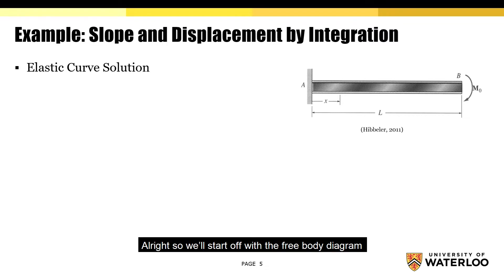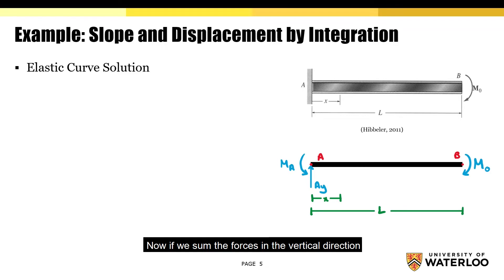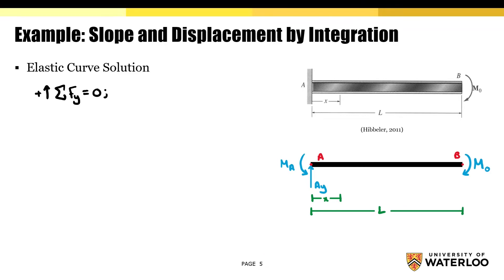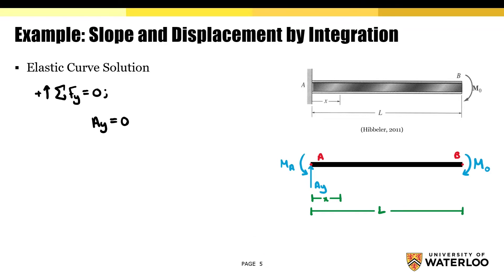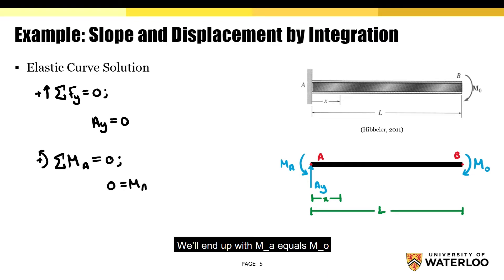We'll start off with the free body diagram. If we sum the forces in the vertical direction, AY would equal zero. Now, if we take the sum of moments about point A, we'll end up with MA equals MO.